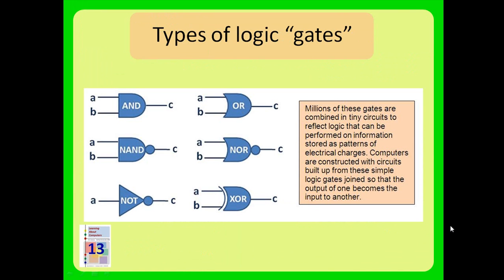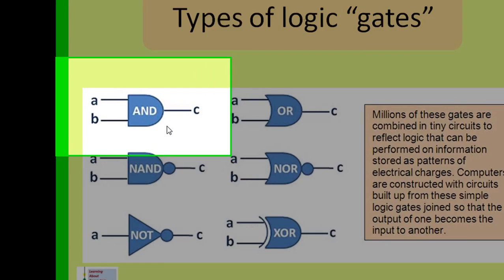Let's take a look inside the system unit — that box that the keyboard connects to. We can talk about memory as semiconductor memory that stores on/off patterns. But how does the computer manipulate these? What it comes down to is electrical gates — gates that can make decisions based on electrical charges being present at one or more incoming conductors or wires.